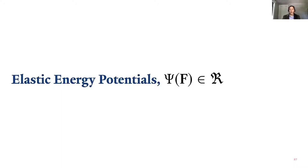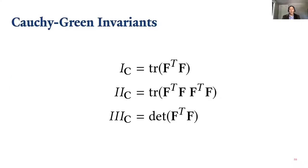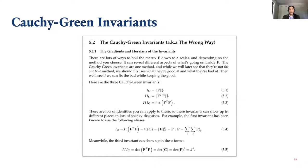We've written down this elastic energy function psi a few times. What do these actually look like? The traditional way to write down elastic energies is using what are called the Cauchy-Green invariants — three invariants that describe every kind of deformation that F could be communicating. To understand them intuitively, if we take the SVD of F, the singular values describe how much things have been stretched or squashed in different directions — they correspond to the lengths of the edges of a cube of material.